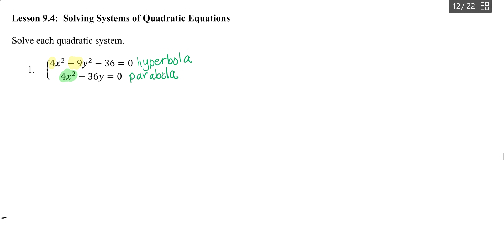So here on this first one, if we look at it, we can see that we have a 4x squared in both of the equations. If I were to cancel that, it would eliminate completely my x terms. So if I multiply the first equation here by a negative 1,